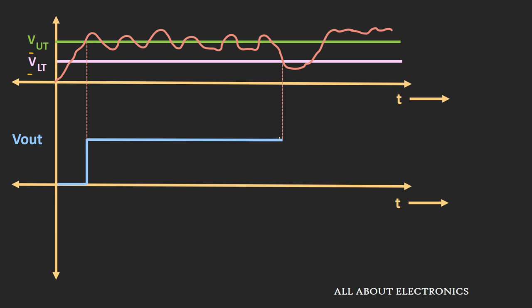The output will go to low voltage only when this input signal goes below the lower threshold voltage. At that point, the output becomes low and remains low until the input signal crosses the upper threshold voltage again. So even if your input signal varies around the upper and lower threshold voltages, your output signal will not change — it will remain constant. This Schmitt trigger provides noise immunity over this band, and the difference between the upper and lower threshold voltages is known as the hysteresis voltage, which defines the noise immunity of the Schmitt trigger.